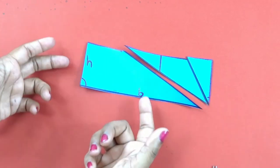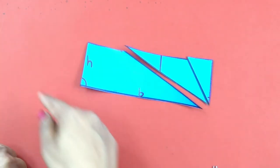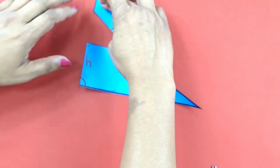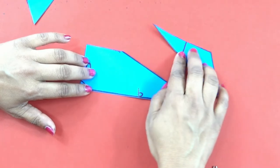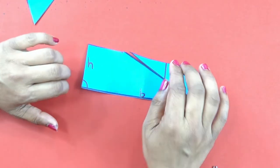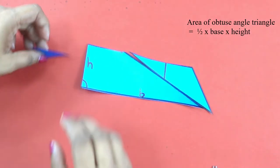So we have proved that again in obtuse angle triangle the same works. That is, area of the obtuse angle triangle is also half into base into height.